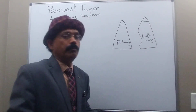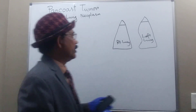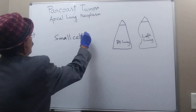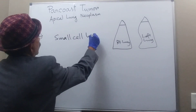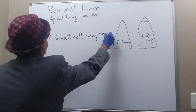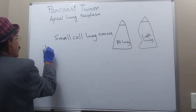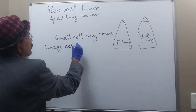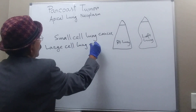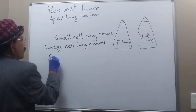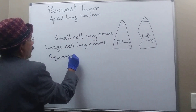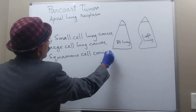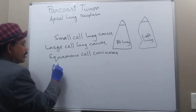The Pancoast tumor may be of any variety of lung cancer. It may be small cell lung cancer, large cell lung cancer, squamous cell carcinoma, or adenocarcinoma.